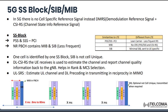For downlink CSI-RS, the UE measures it and accordingly responds to the gNodeB in uplink that this is the quality it is receiving, so the gNodeB can assign a particular rank and modulation scheme to achieve a good data rate if there are good radio conditions.